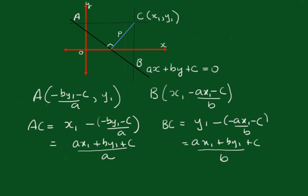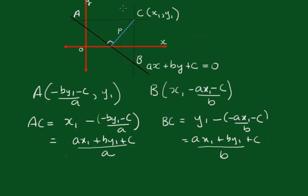So the area of this triangle ACB, because these are perpendicular to each other, the area is equal to half the base of this one times the height of that one. So that will be, because they're both the same, ax1 plus by1 plus c all squared all over ab.